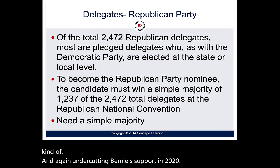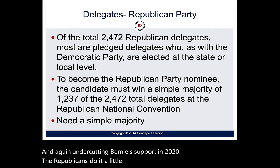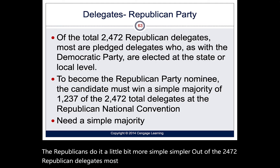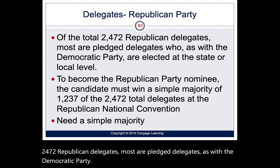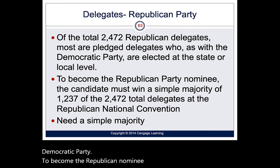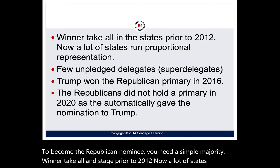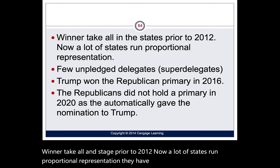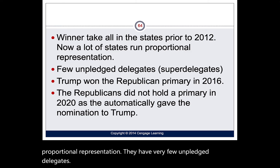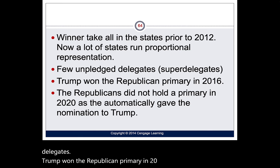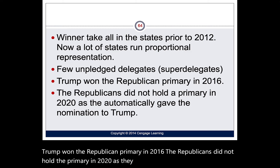The Republicans run their delegate process more simply. Of 2,472 Republican delegates, most are pledged delegates. To become the Republican nominee, you need a simple majority. Prior to 2012, it was winner-take-all in states; now many run proportional representation. They have very few unpledged delegates. Trump won the Republican primary in 2016. In 2020, Republicans did not hold a primary — they automatically gave the nomination to Trump.